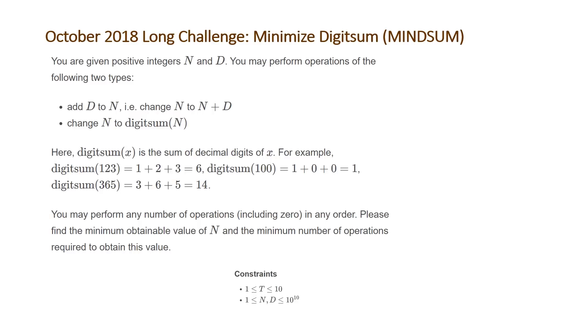Here digit sum of x is the sum of the decimal digits of x. For example, if you have digit sum of 123, 1 plus 2 plus 3 equals 6. If you have digit sum 100, 1 plus 0 plus 0 equals 1, and if you have digit sum 365, 3 plus 6 plus 5 equals 14.